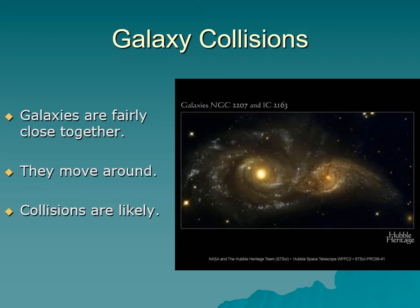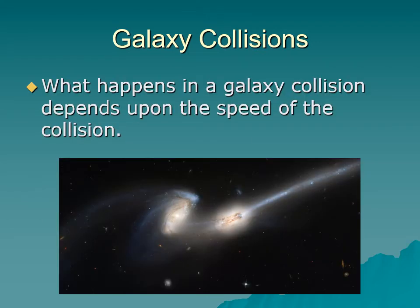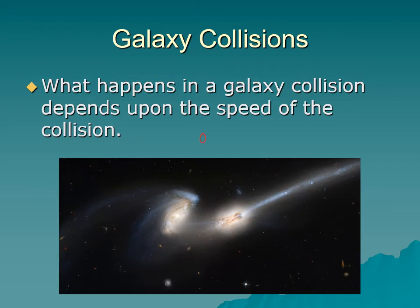Galaxy collisions happen far more often than star collisions. When galaxies collide, how fast they come together really matters. If spiral galaxies collide quickly, they pass through each other and just strip away the interstellar medium. But if spiral galaxies collide slowly, they swirl around and merge, and as they do, gravity rips and pushes stuff out. They merge into something new, but spill material out during the collision process.